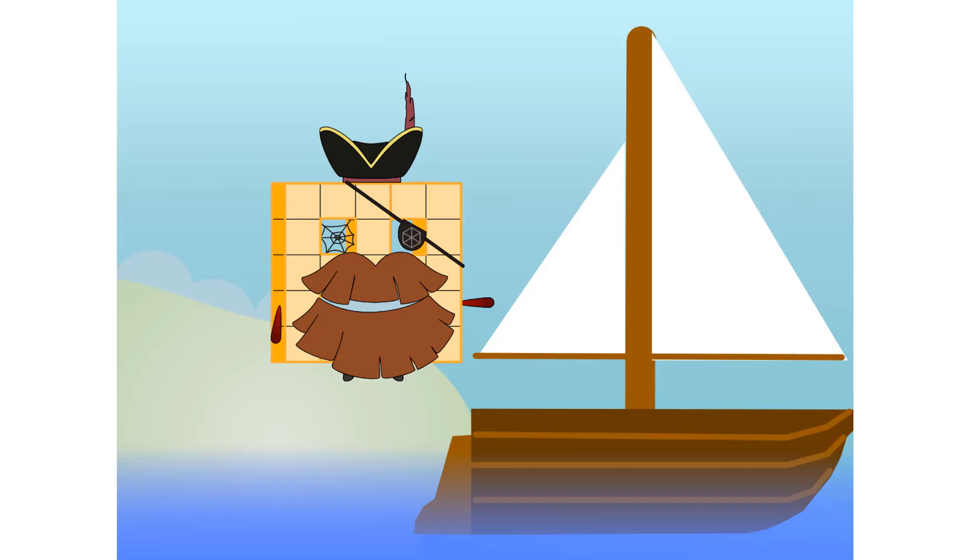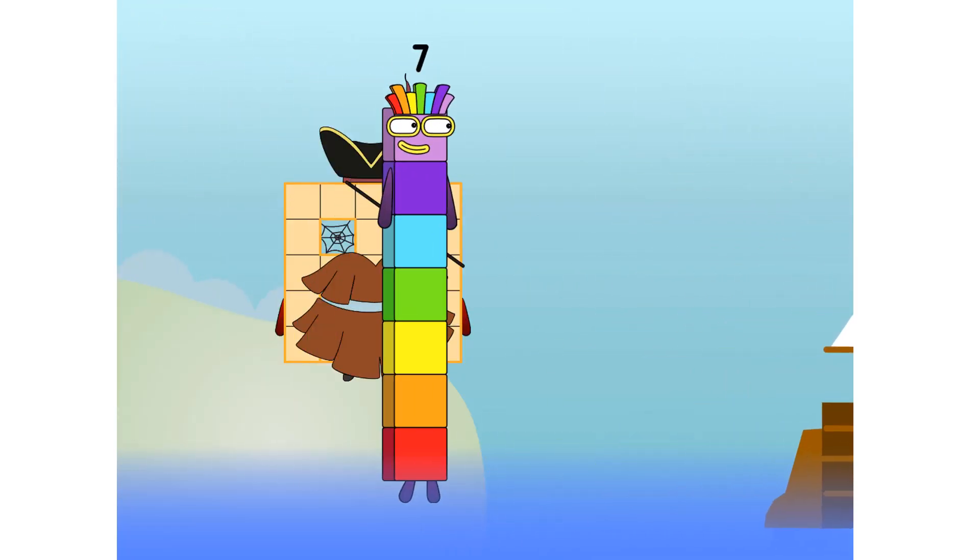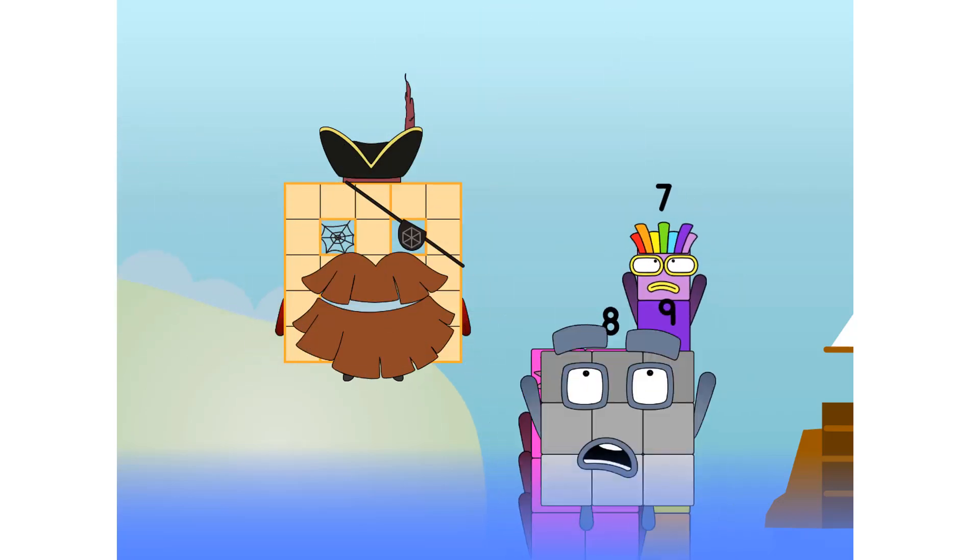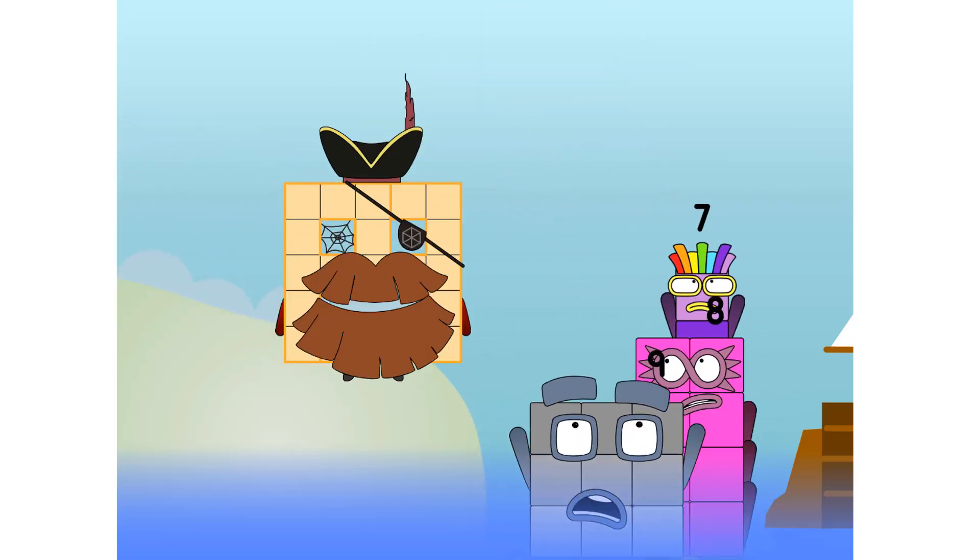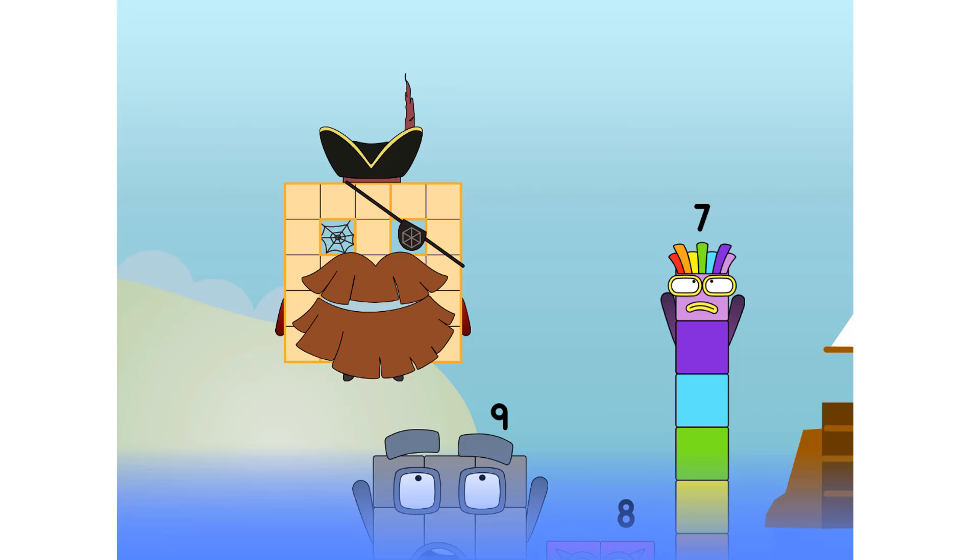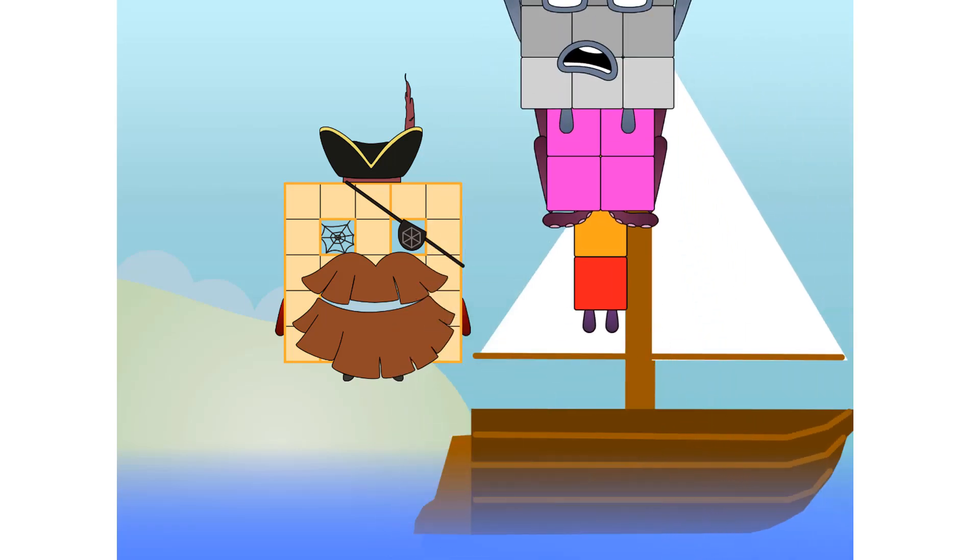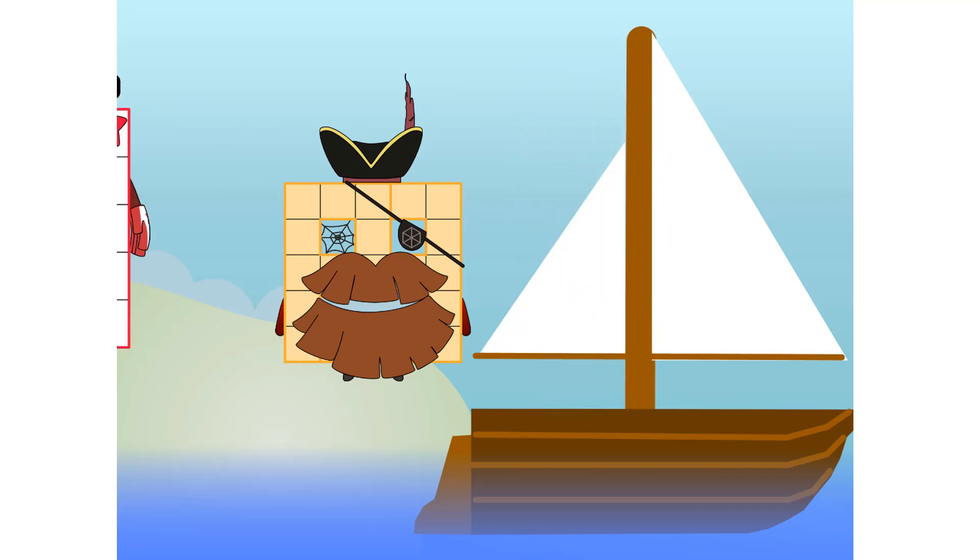All right, me hearties. Into the boat you go. I have room for 20 numbers. Number one, two, move along lads, three, four, five, six, seven, step lively, eight, smartly now, move along, nine. Blow me down, number's overboard. Hang on lads, it's a good thing you know how to swim. Let's go, me hearties.